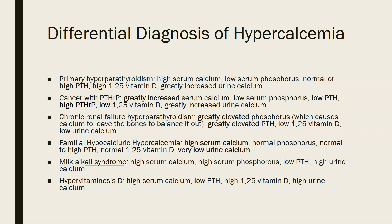In chronic renal failure hyperparathyroidism, you will see high phosphorus — because the kidneys aren't excreting it — which causes calcium to leave the bones to try to compensate. There is greatly elevated parathyroid hormone, low 1,25-hydroxyvitamin D, and low urine calcium because the kidneys are not functioning properly and cannot excrete calcium normally.